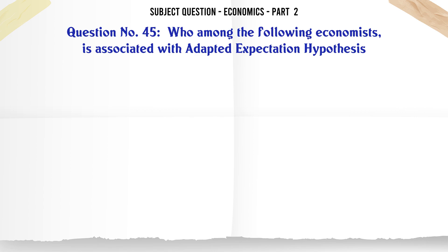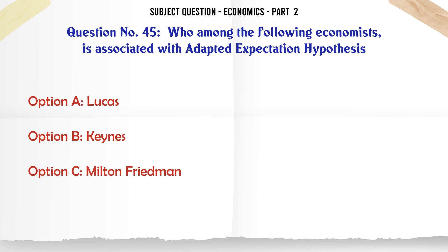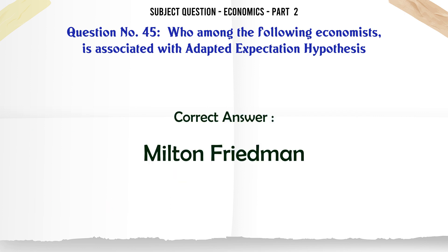Who among the following economists is associated with the adaptive expectations hypothesis? A. Lucas. B. Keynes. C. Milton Friedman. D. John Muth. The correct answer is: Milton Friedman.